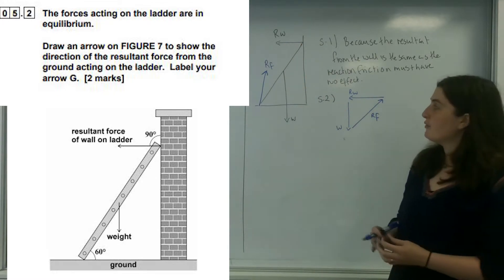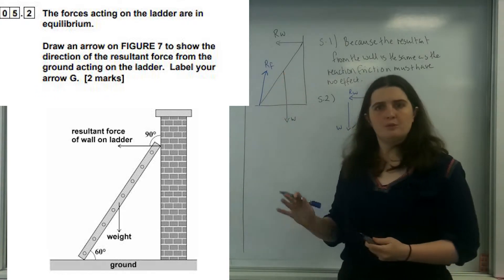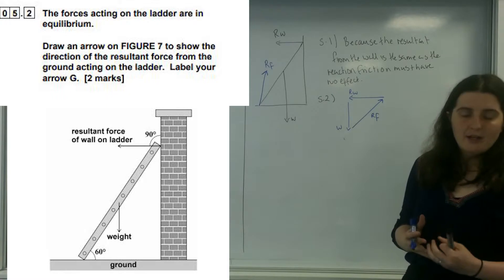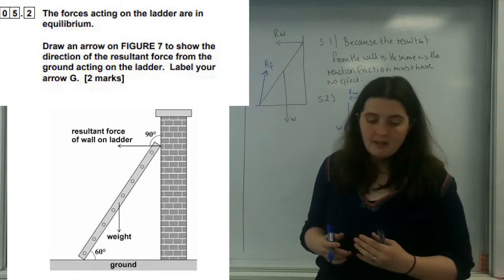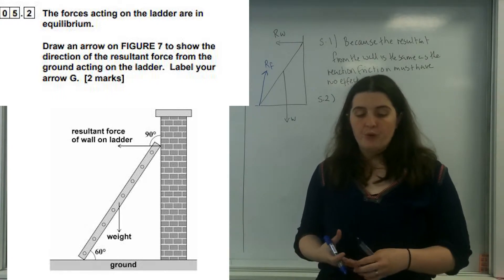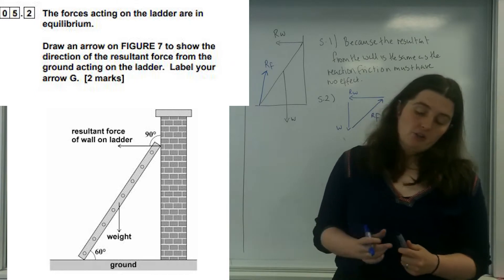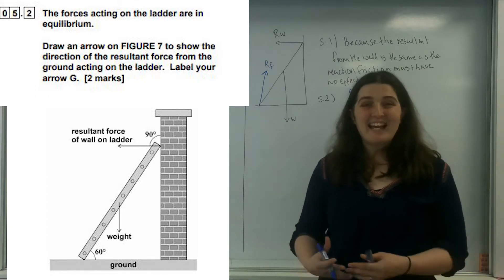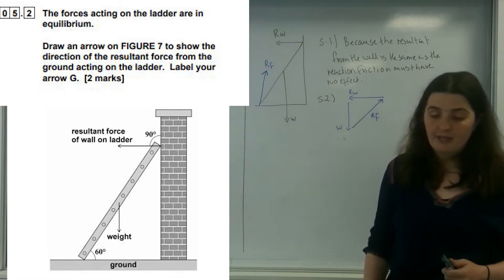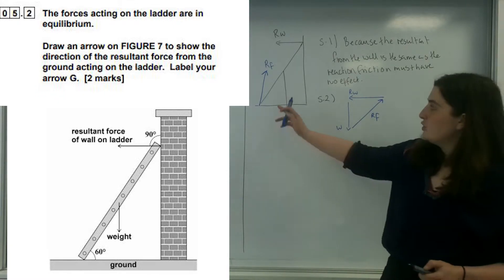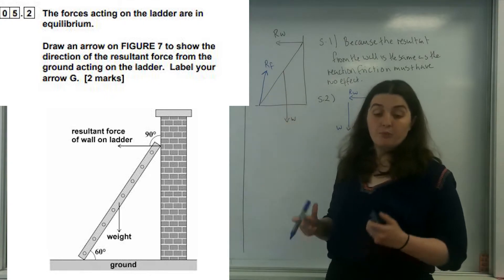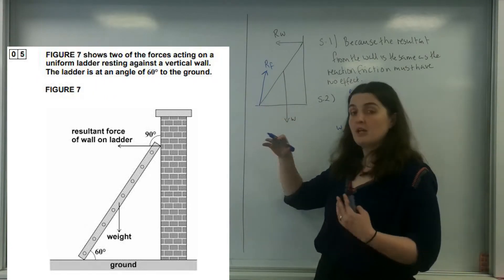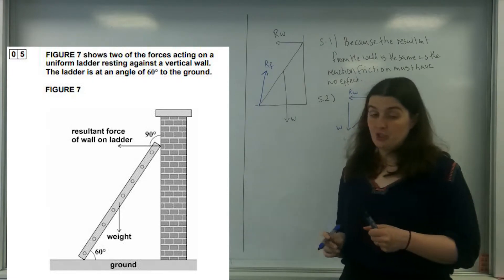There's one mark for it being vertical and one mark for it actually being at an angle. What they're after is that it be at an angle going through the 'on ladder' part of the label — you could get that by taking a scale drawing of those forces. Just to make you aware, it is at an angle because it is the resultant of all the forces: not just the reaction, but the friction too.